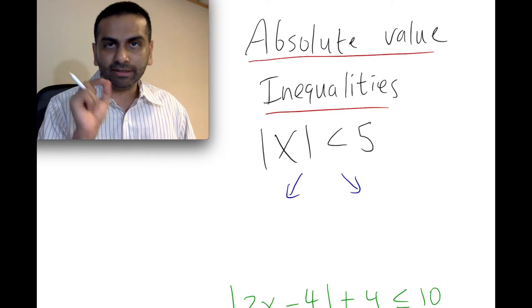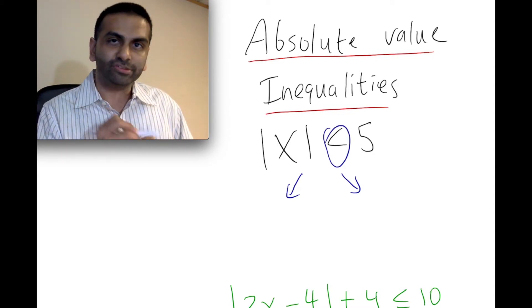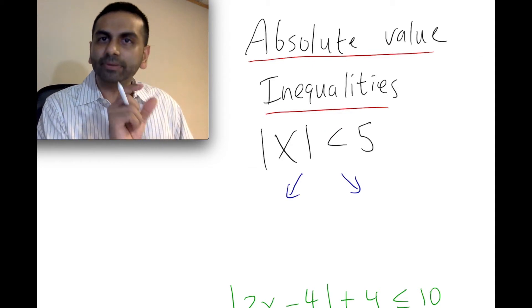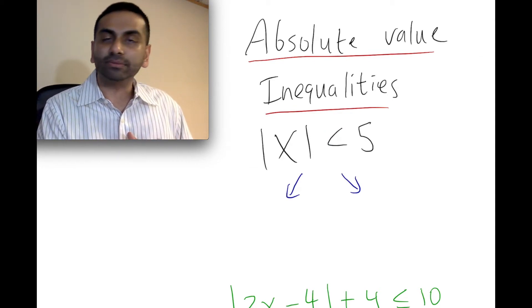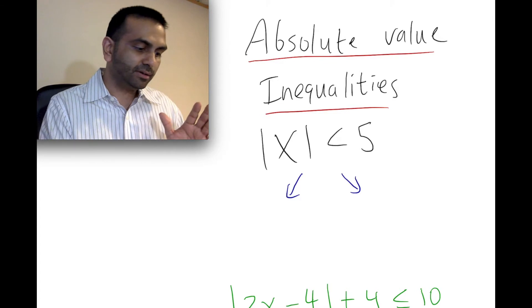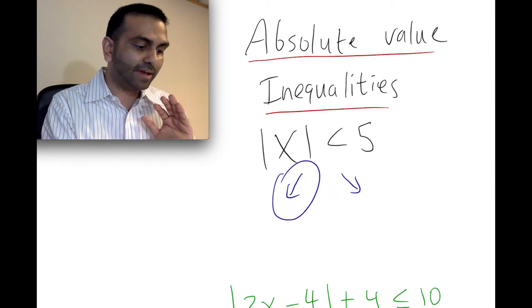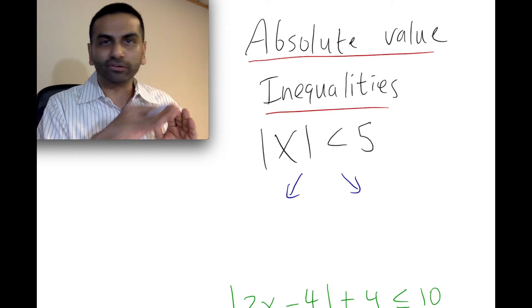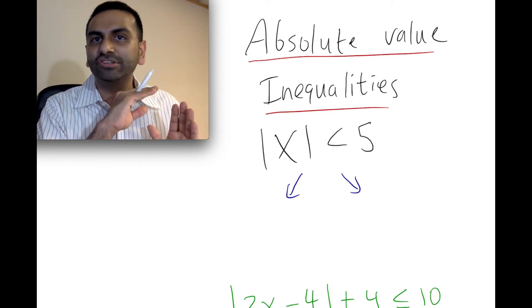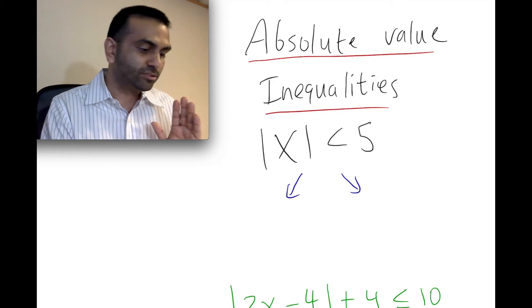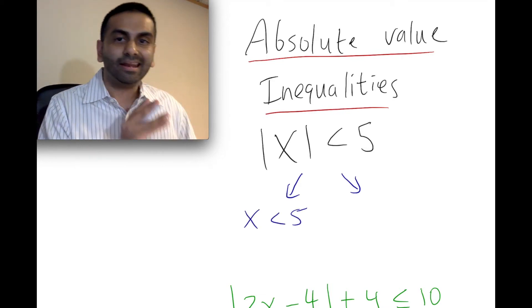The only difference when it involves an inequality rather than an equal sign is that you flip that inequality when setting it equal to the negative value. So for the first case, just ignore the absolute value and copy it down: x less than five.